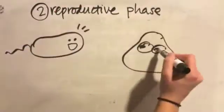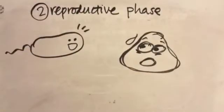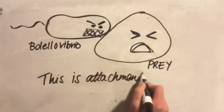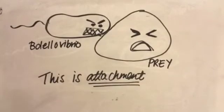The second is the reproductive phase. Bdellovibrio will attach to its prey, and after attachment, Bdellovibrio will lose its flagellum.